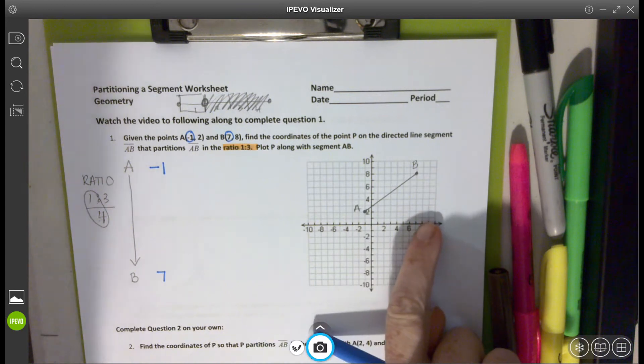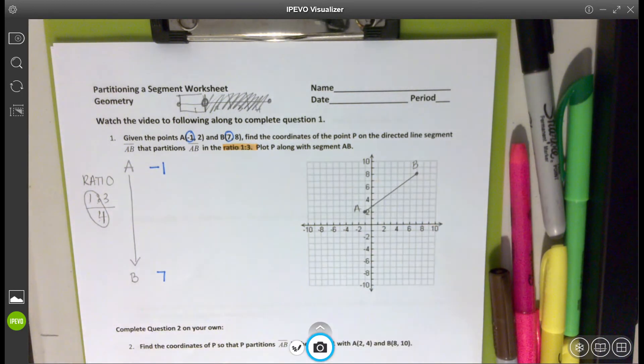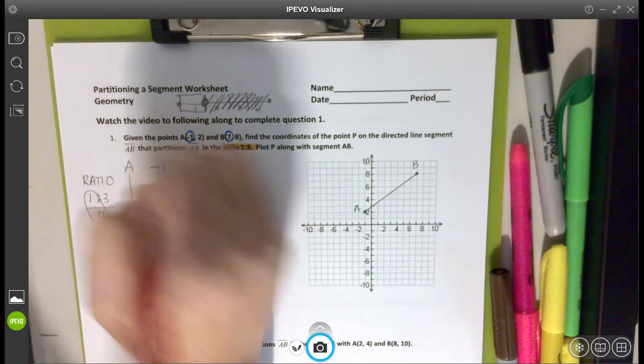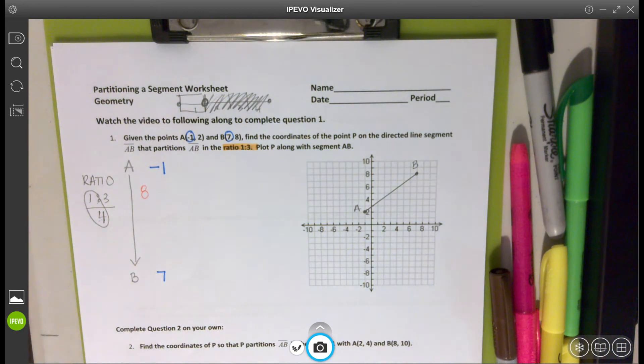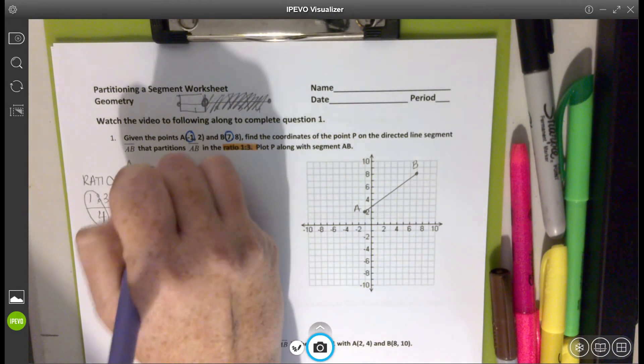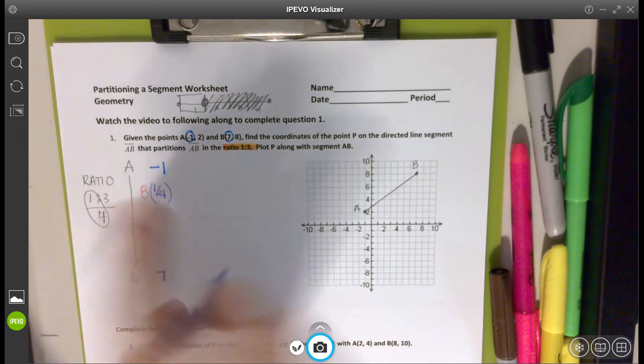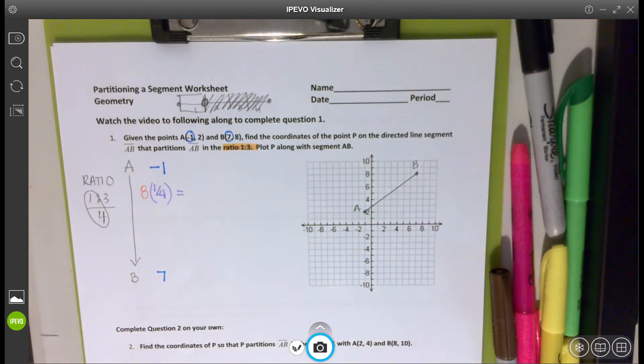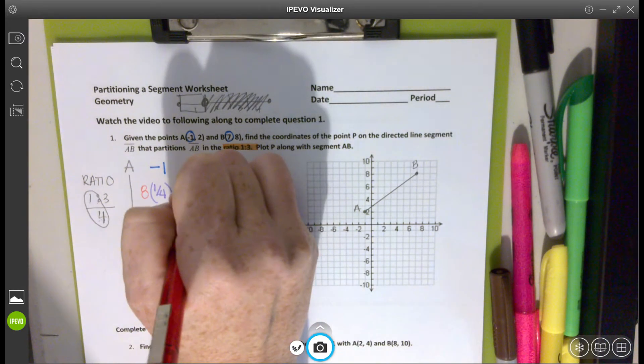How many units in total am I traveling? So I am traveling a total of eight units for my X. I want to find a fourth of that. A fourth of that is because of that ratio we started with. So I'm going to take a fourth of eight and that will give me two.